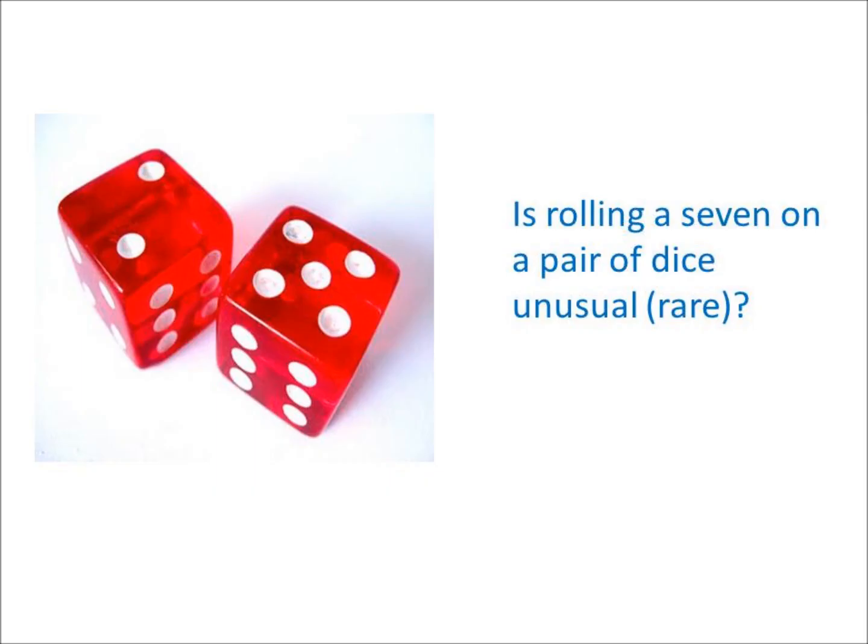This is an introduction to the rare event rule for inferential statistics. The question is: is rolling a 7 unusual or rare? Of course not. If you recall from our previous section, rolling a 7 is the most common result when you roll a pair of dice.